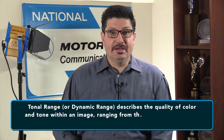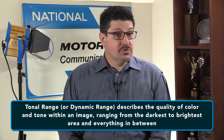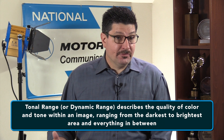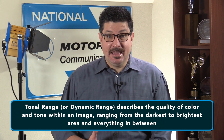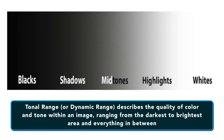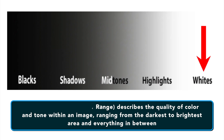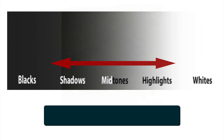In photography, the term tonal range, also sometimes referred to as dynamic range, is used to describe the quality of color and tone within an image, ranging from the darkest to the brightest areas and everything in between.